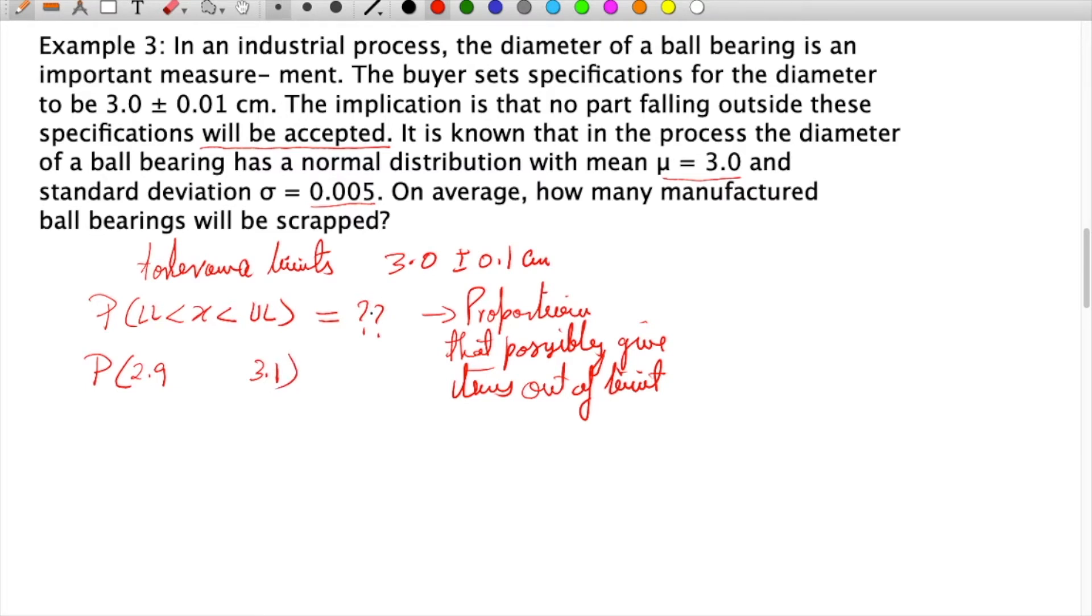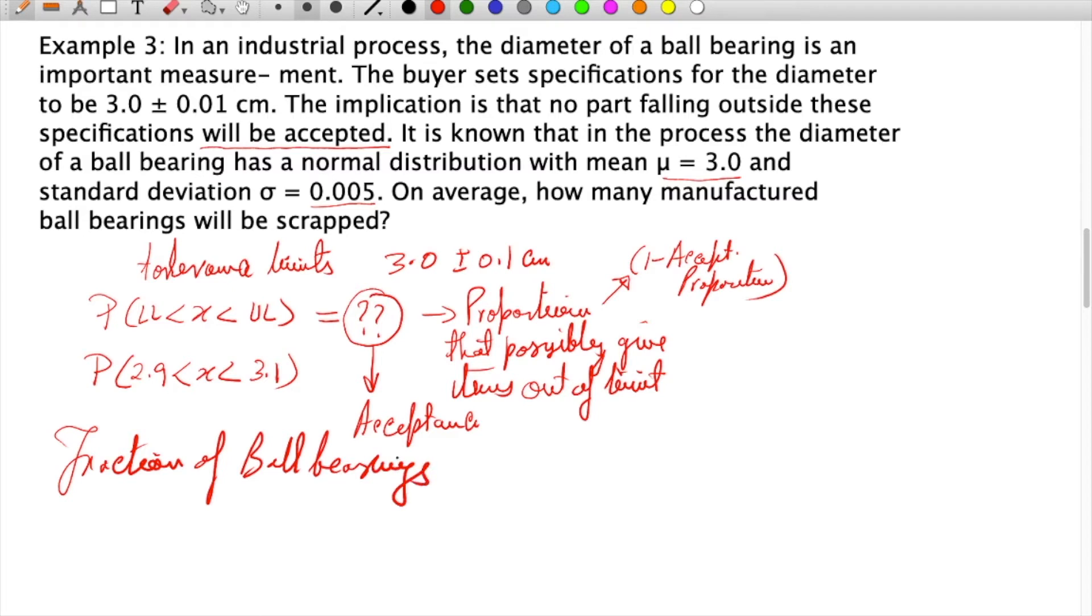Whatever goes outside will be 1 minus the acceptable proportion. If we know this probability, we can determine the fraction of ball bearings produced that may fall outside acceptable limits.